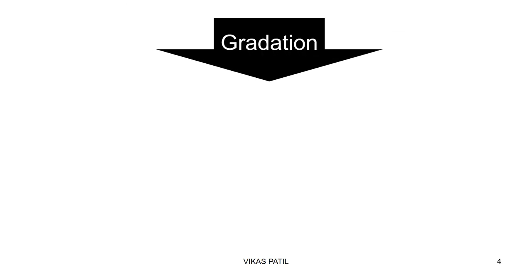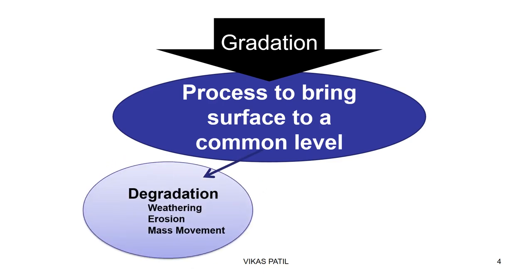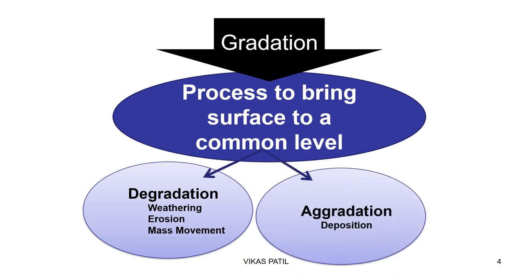Nature is playing a balancing role — nature is trying to bring all the land to the same level. That's done through gradation, the process of bringing the land to a common level. This happens through two processes. One is degradation — anything which is higher has to be degraded to lower heights. It is done through weathering, erosion and mass movement. Then there is aggradation, which is done through deposition, which means you uplift the lower areas.